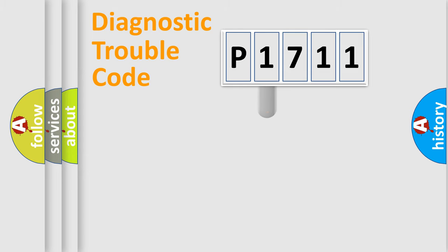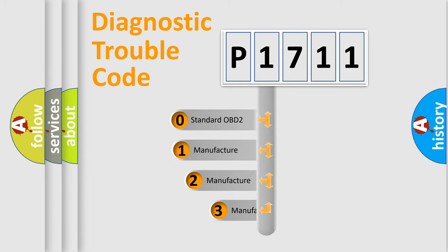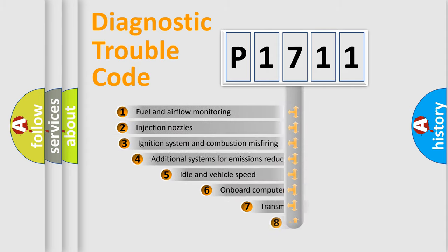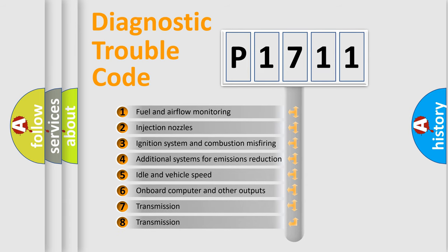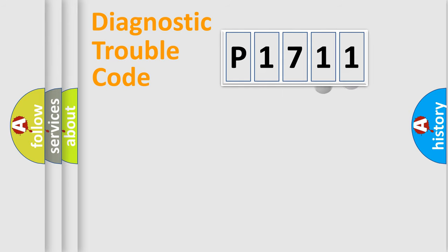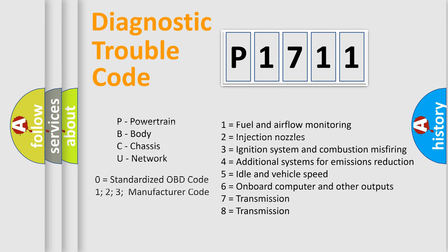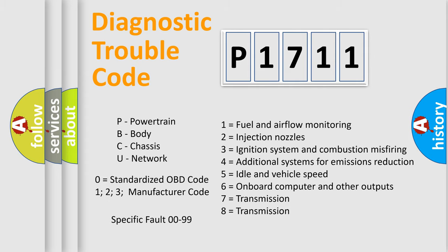This distribution is defined in the first character of the code. If the second character is expressed as zero, it is a standardized error. In the case of numbers 1, 2, or 3, it is a manufacturer-specific error expression. The third character specifies a subset of errors. The distribution shown is valid only for the standardized DTC code. Only the last two characters define the specific fault of the group. This division is valid only if the second character code is expressed by the number zero.